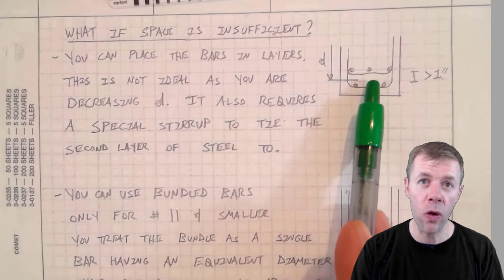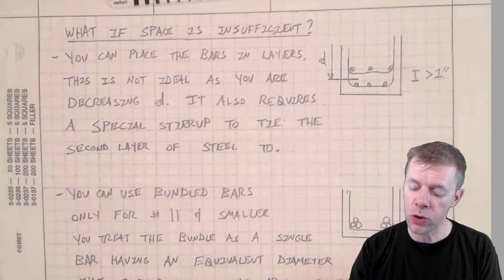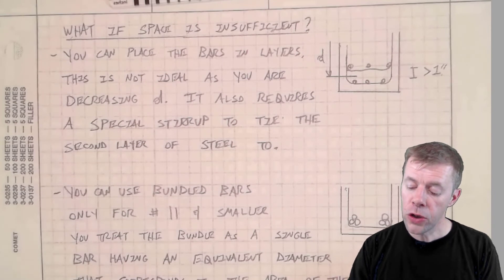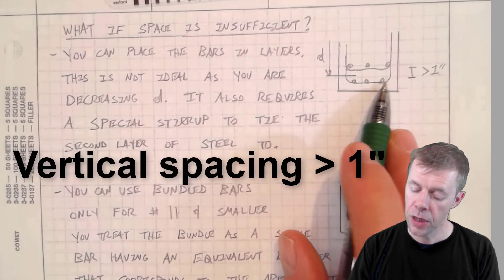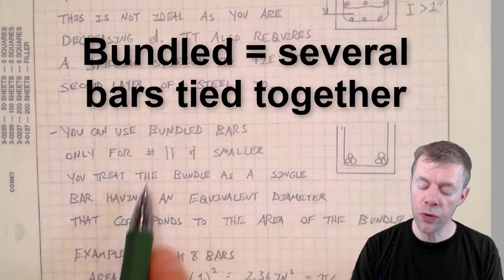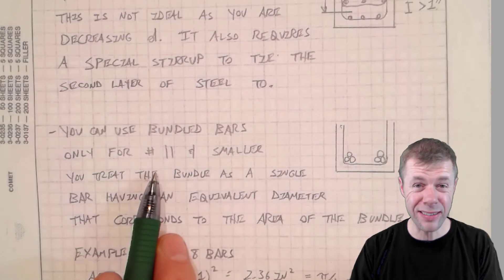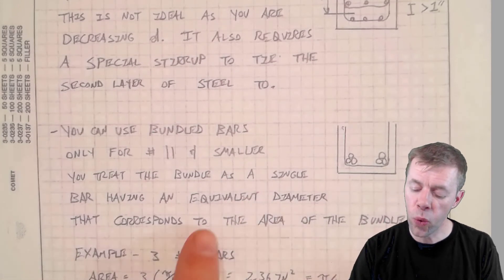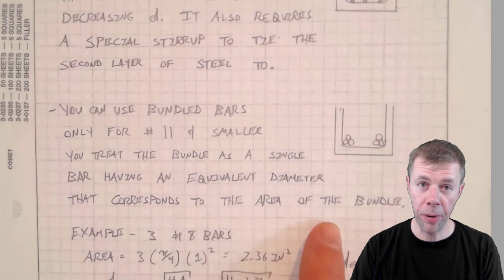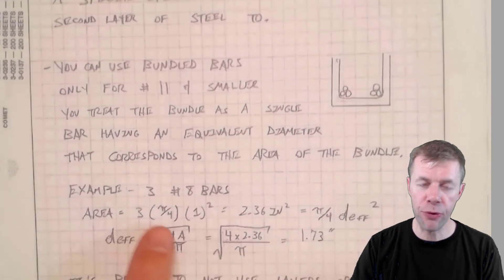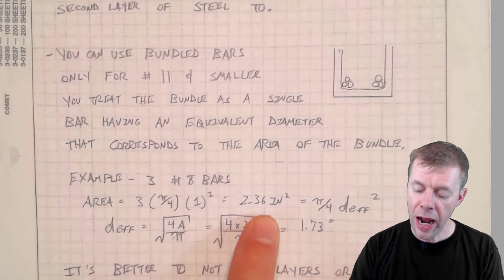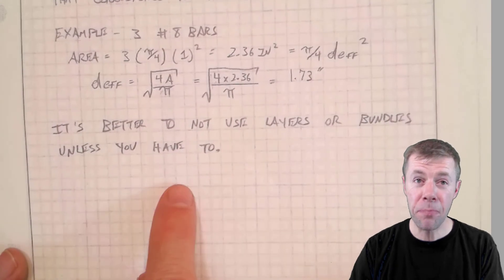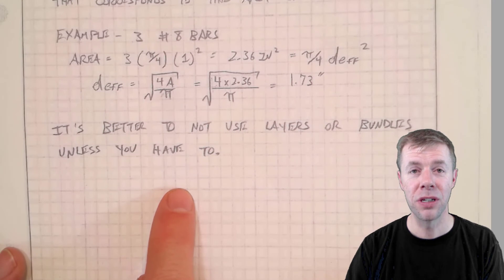Or a bunch of concrete that's not around those bars, that would be awful. So it also requires a special stirrup, a double stirrup to tie that. But if that's what you need, baby, use it. That's what you gotta have. Usually, we want this spacing to be at least greater than one inch between these bars. You can also use bundled bars. Now, this only works for number 11 bars and smaller. They don't really have test data for bars larger than this. And you can treat bundled bars as a single big bar, having an equivalent diameter that corresponds to the area of the bundle. There's a nice trick for you. For example, if I have three number eight bars that I want to bundle together, I can find their area and I can solve for what their effective diameter is. And I would use that in all of my checks and all my calculations. But remember, it's better to just not use layers or bundles, unless you just have to.